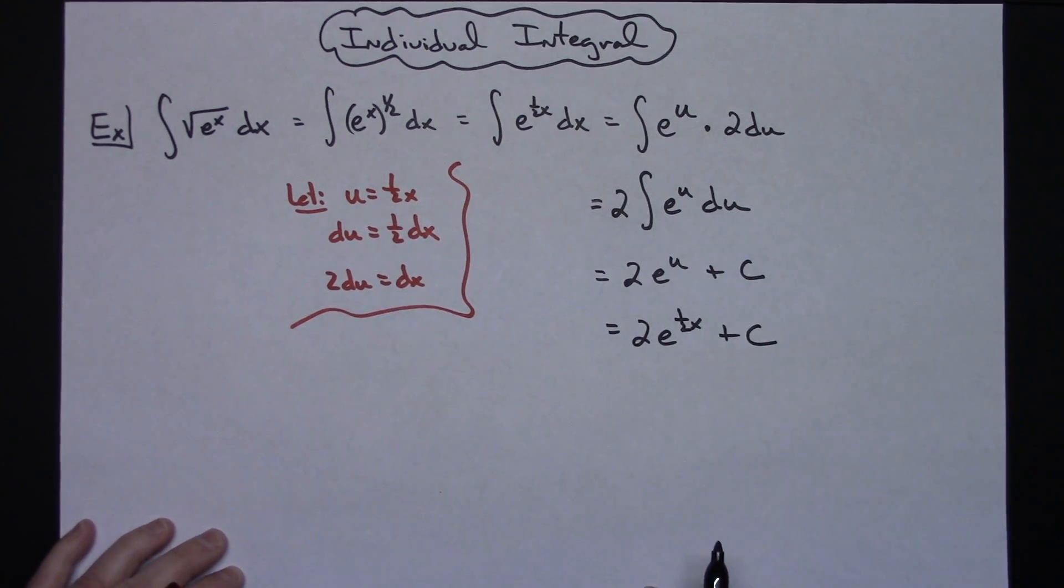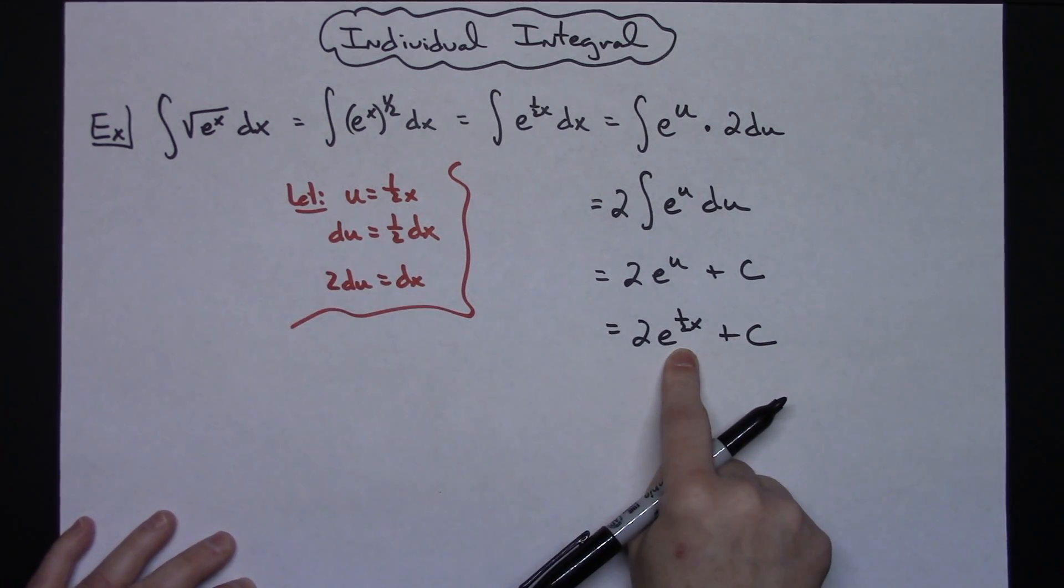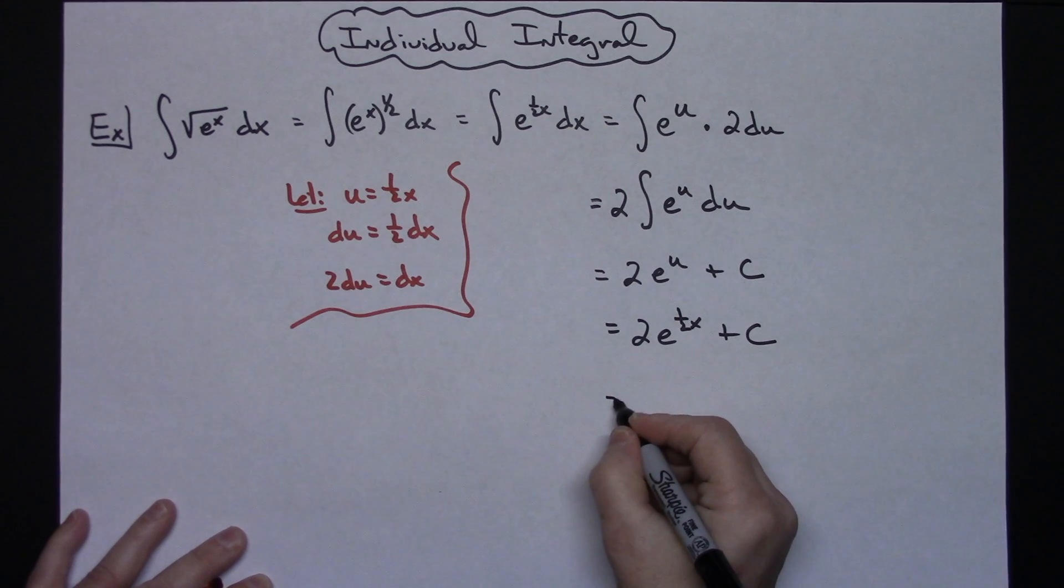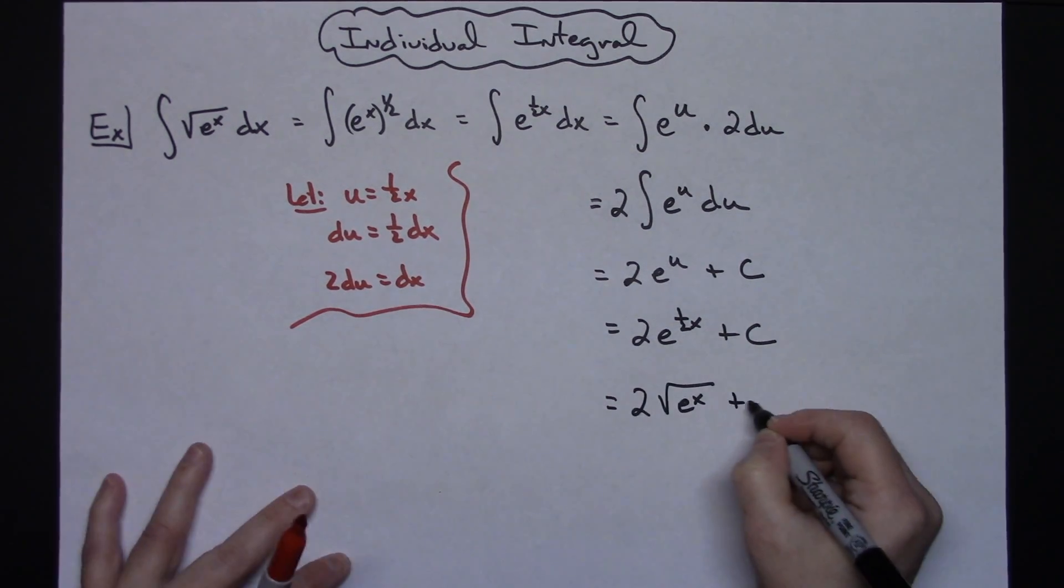And technically you could stop right there. But if you want to put your answer in the same form as your original equation, then go ahead and rewrite this back as a square root. So then we would have 2 square root of e to the x plus c.